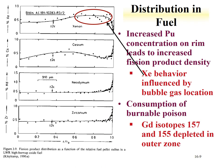Xenon actually shows a decrease right on the edge of the fuel because xenon is extremely volatile and will find void locations and congregate there. There are also variations in burnable poison - gadolinium isotopes 157 and 155, used as burnable poisons, tend to be depleted in this outer zone.